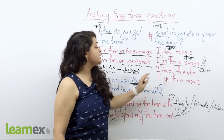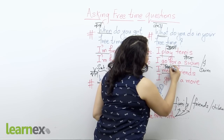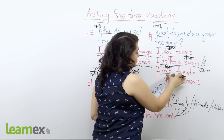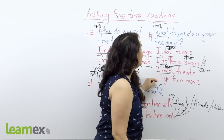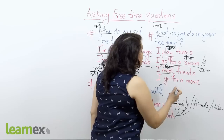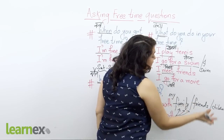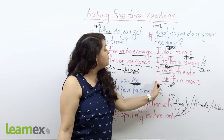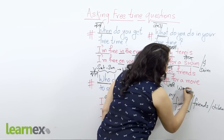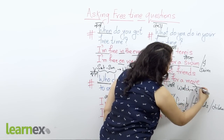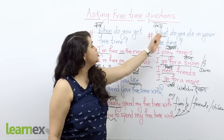The next answer is: 'I meet friends' — the verb 'meet' means to meet someone (मिलना). Another answer: 'I go for a movie' — meaning I go to watch a film. You can also say: 'I watch a movie' — 'watch' means to see/view (देखना). So both forms are correct.